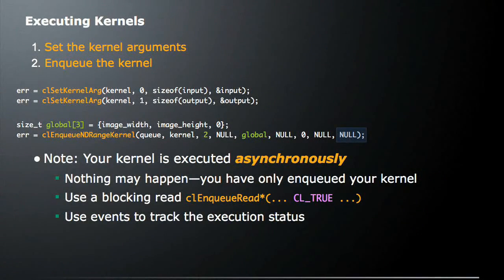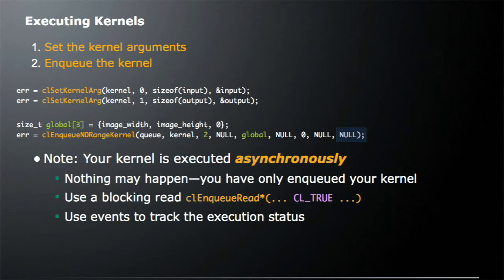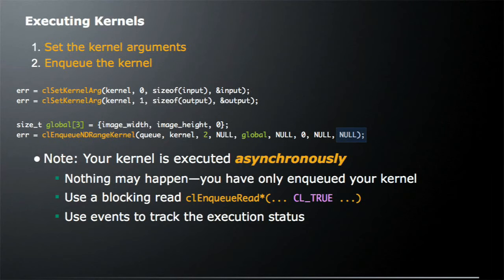Now that we've compiled our program objects and created our kernel objects, we want to execute the kernel. There are two basic steps: first, set the kernel arguments; second, enqueue the kernel. To set arguments, we use clSetKernelArg. The first argument is the kernel, the second is the index of the argument to set, the third is the size of that argument, and the fourth is the actual value. For example, we set the zeroth argument with the size of input to the value input, and then set the output argument similarly.